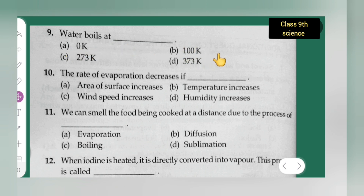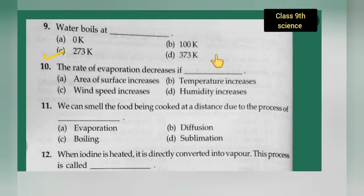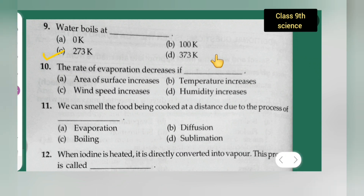Question 9: The boiling point of water in Kelvin. Option A is 100 Kelvin, option B is 100 Kelvin, option C is 273 Kelvin, option D is 373 Kelvin. The correct answer is 373 Kelvin — water boils at 373 Kelvin.